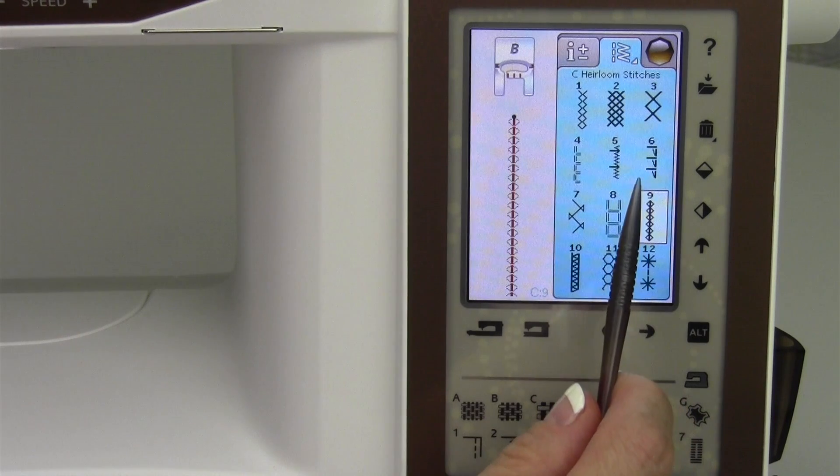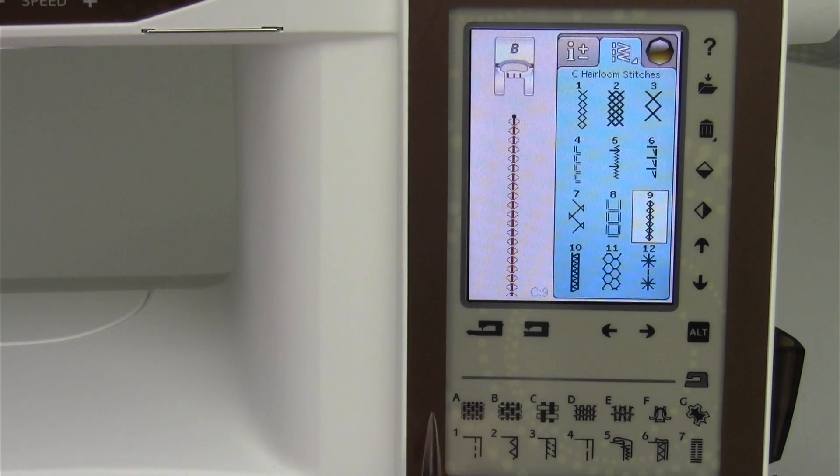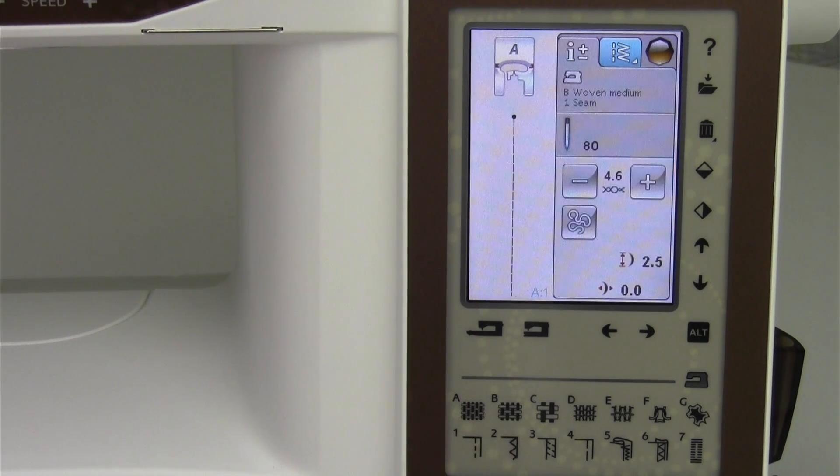I want to go back to a straight stitch. If you come down here to our sewing advisor, technique number one is a seam. That is a straight stitch. I'm back to a straight stitch.